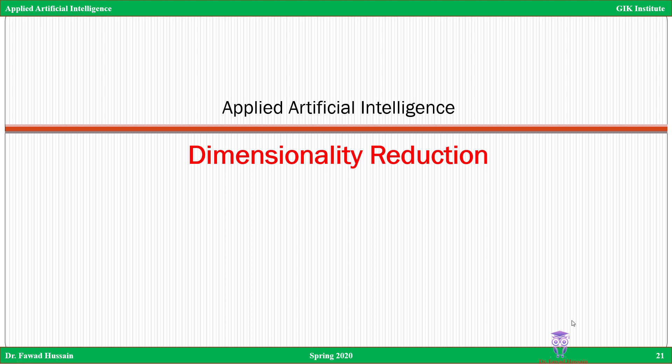Bismillahirrahmanirrahim. In this lecture, we are going to look at dimensionality reduction. In the last lecture, I said there are two ways to reduce the dimensions of data. One of them was feature selection, which we covered in the last lecture. The second one is dimensionality reduction, which we are going to look at in this lecture.